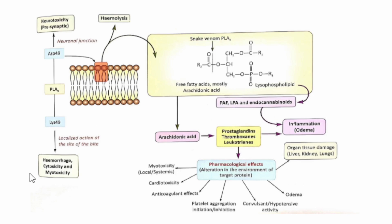There are two forms of phospholipase A2 in snake venom. One is lysine 49, where lysine is at the 49th position of the active site, and the other is aspartic acid at the 49th position of the active site. The lysine 49 form does not have any enzyme activity but acts locally at the site of snake bite, causing hemorrhage, cytotoxicity, and myotoxicity.